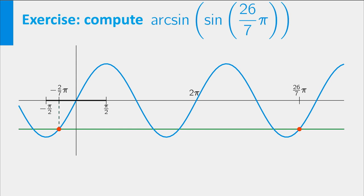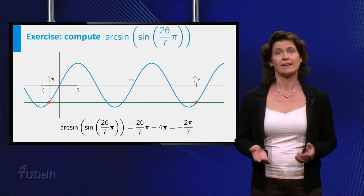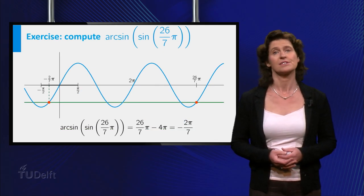You get there by subtracting 4 pi from 26 sevenths pi. So you end up at the angle minus 2 sevenths times pi.